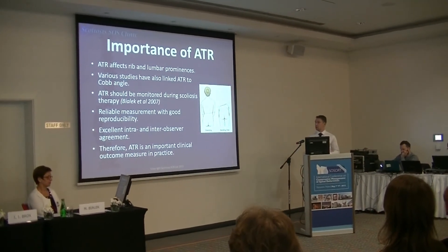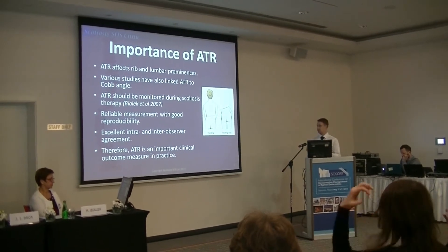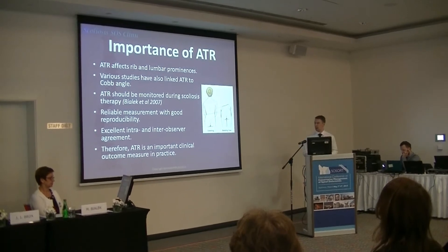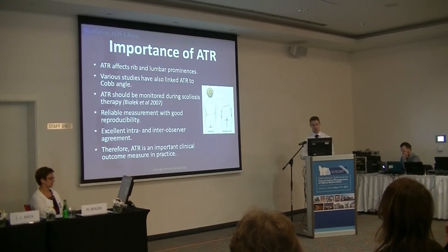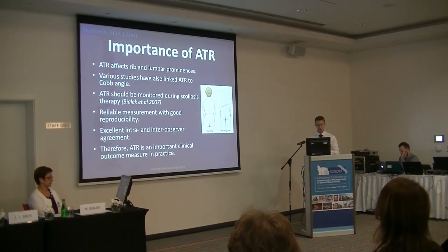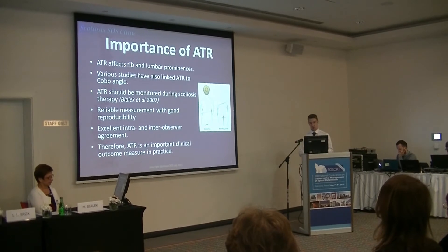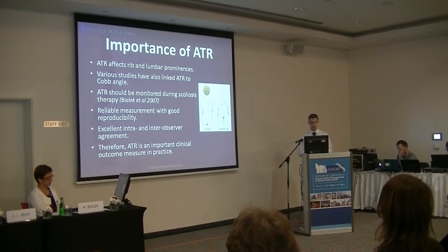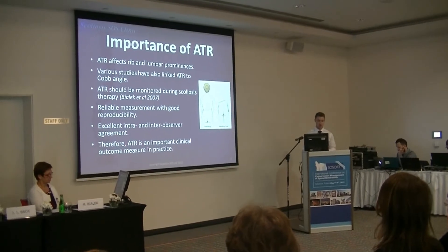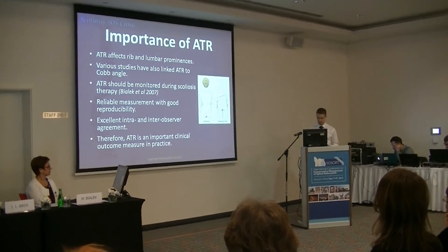The importance of ATR is that it affects rib and lumbar prominences. Various studies have tried to link ATR to Cobb Angle with varying degrees of success. Most people agree that ATR should be monitored throughout scoliosis therapy. It has been shown to be a reliable measurement with good reproducibility and excellent intra- and inter-observer agreement, making it an important clinical outcome measure in practice.